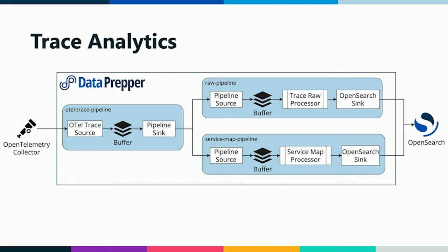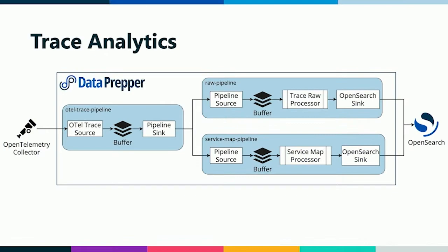For trace analytics, you'll normally use a pretty standard pipeline receiving data from the OpenTelemetry collector, then split the data into two sub-pipelines. Think of a web request going through your system — it's probably going to hit multiple machines. Think of each machine as a span, and the overall accumulation of all those as a trace. Each machine only knows about its own span, and all those spans come into Data Prepper. The trace raw processor can enrich all those spans with data accumulated from all spans — the overall trace.